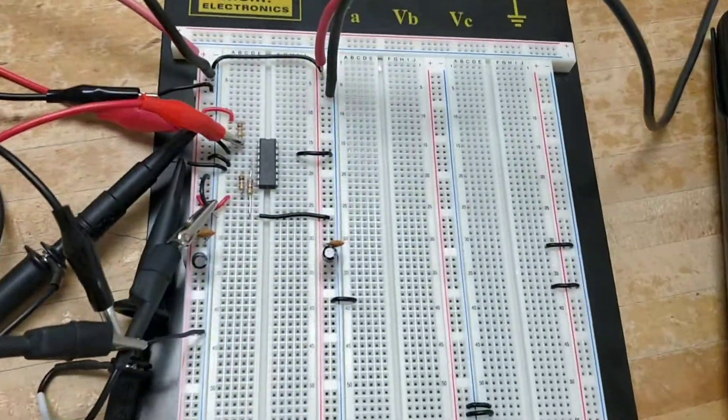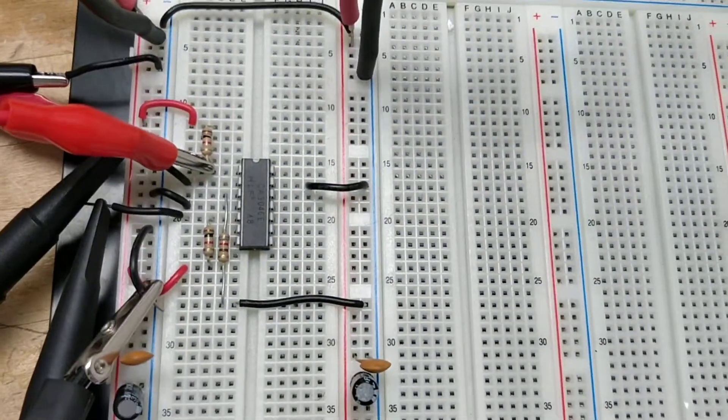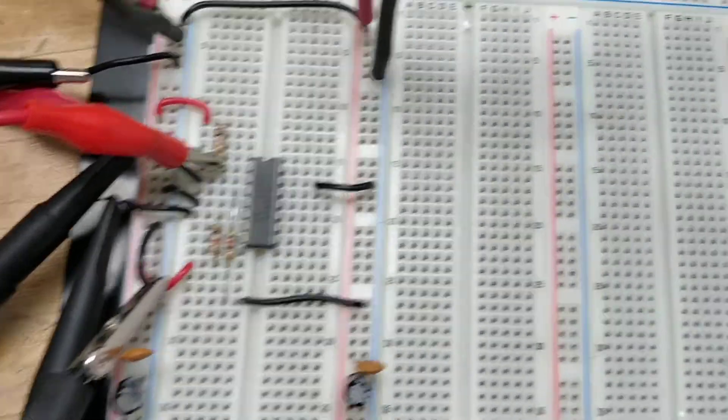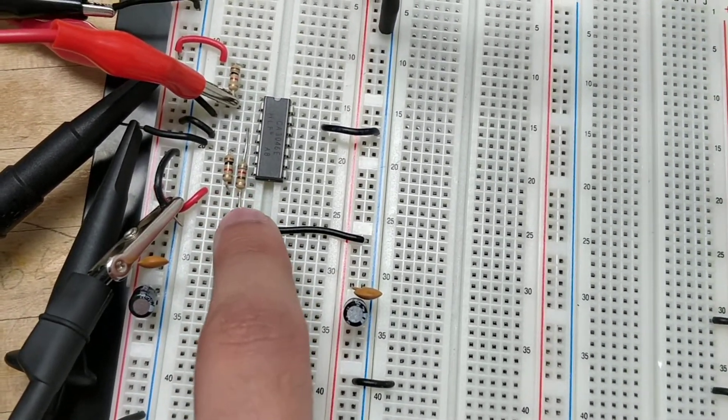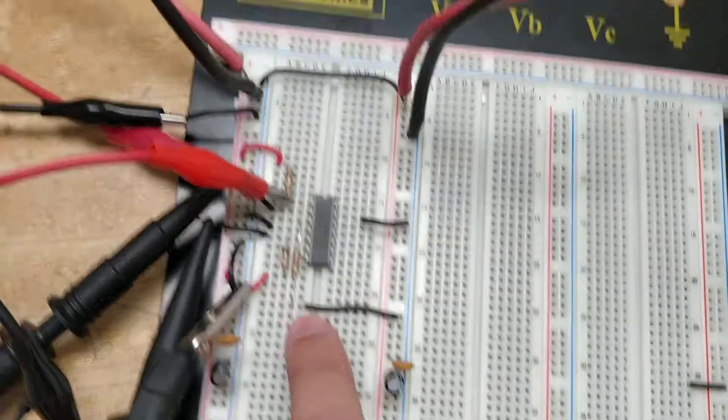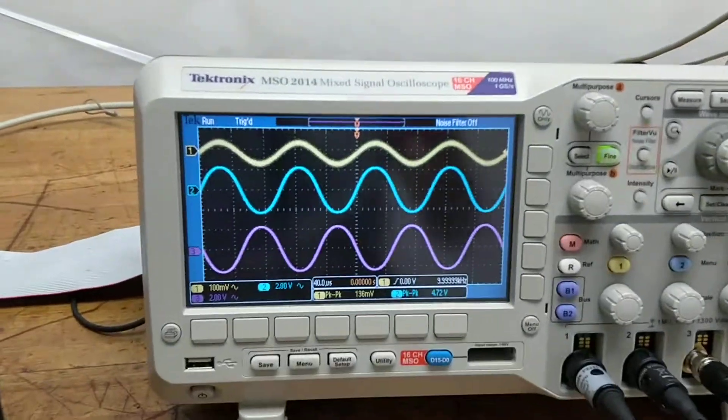So this is what the circuit looks like. You see I have very short wires hooked up here. This is to avoid oscillations and then this is what the oscilloscope looks like.